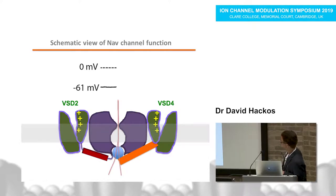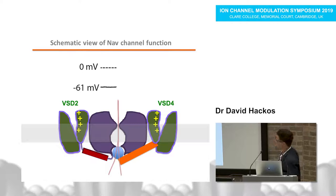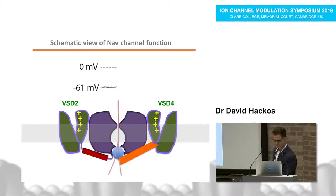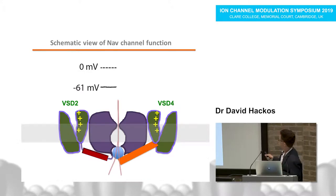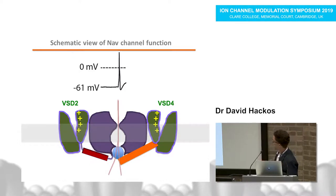This longer domain 4 voltage sensor was noticed early on in sequencing these channels, but no one has fully understood why. I hope to show you today why this voltage sensor is longer than the others. Voltage-gated sodium channels have four voltage-sensing domains: VST4 has a specialized role involved in the inactivation process, which is different from potassium channels where all four voltage sensors are involved in activation.